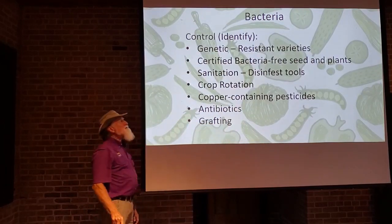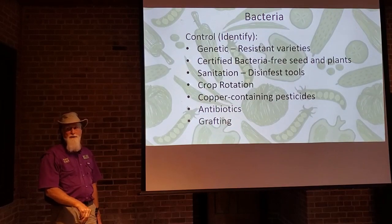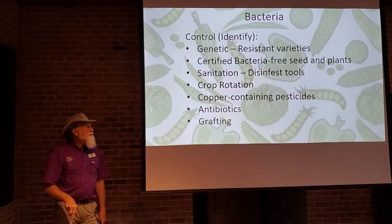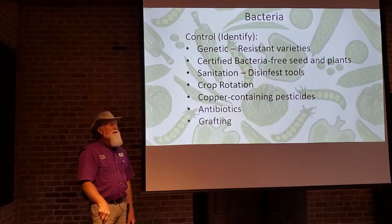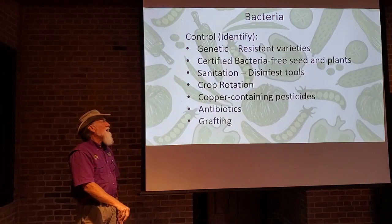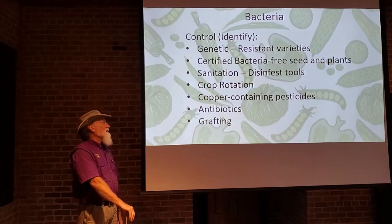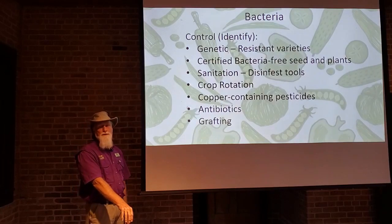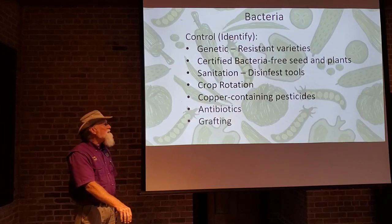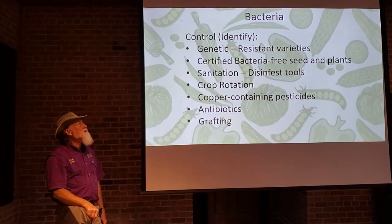Genetic resistance: there are resistant varieties to many bacterial diseases that have been bred for resistance — once again, you can find that information in your seed catalog. Copper-containing pesticides: copper is very deleterious to bacteria and can help control bacterial diseases. Once a plant gets most of these diseases — viruses, bacteria, even fungi — you can't really cure it, so the way you want to control it is to prevent it from getting the disease.